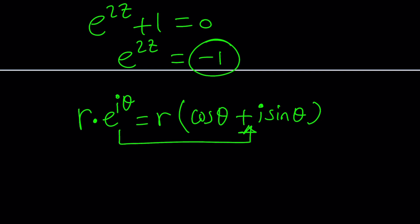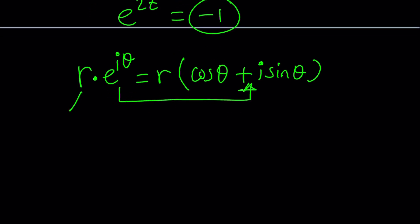e to the i theta can be written as cosine theta plus i sine theta. So there's a relationship between the exponentials and the trigonometric functions. And of course, i is involved. It can't get any better. So by using this, we can pretty much write it. So what is R though? R is the modulus, or it's also known as the absolute value.